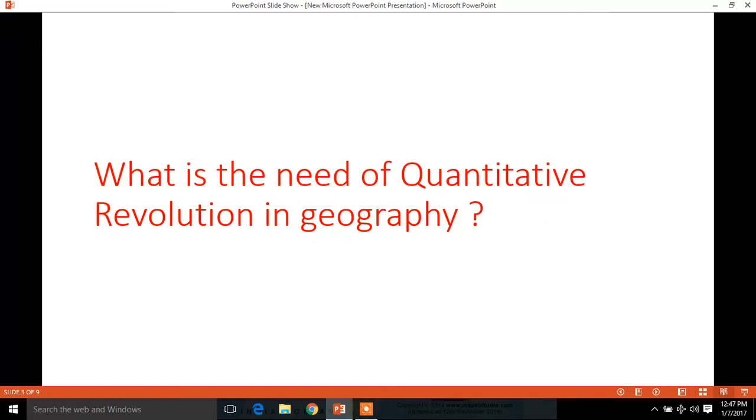So question arises, what is the need of quantitative revolution in geography? We will go in history. After Second World War, there was a confusion among geographers about the nature and social relevance of geography. The status of geography as a university discipline was also under discussion. Many scholars believed that geography is not a university subject and many departments of geography at various universities were closed.